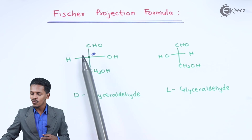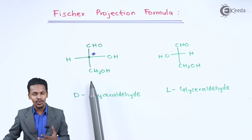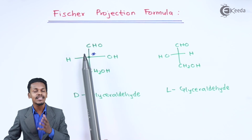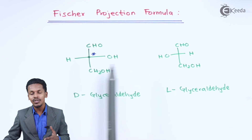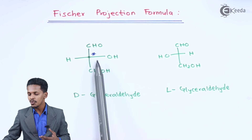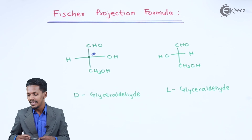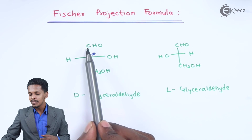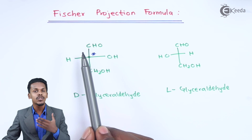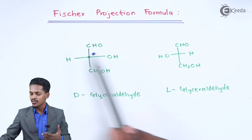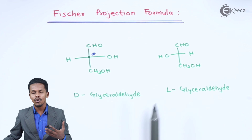The vertical line represents carbon atoms going into the page, while the horizontal groups are above the plane. The carbon present at the topmost position is the most oxidizable carbon atom. This is a short description about the Fischer Projection formula.